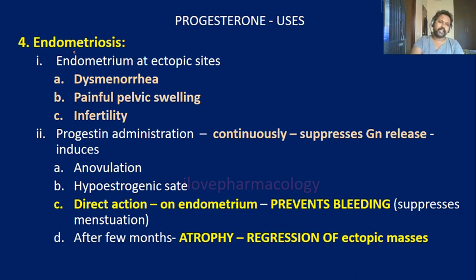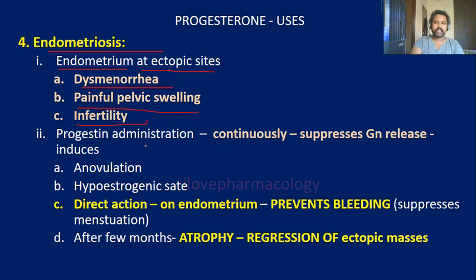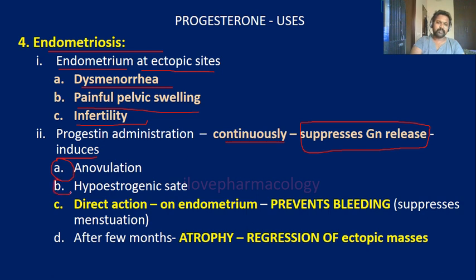The fourth use is in the treatment of endometriosis. Endometriosis is due to endometrium lying at ectopic sites — meaning endometrium present outside the uterine cavity. This can cause dysmenorrhea, painful bleeding, painful pelvic swelling, and infertility. Administering progesterone continuously suppresses gonadotropin release, thereby inducing anovulation, and produces a hypoestrogenic state.